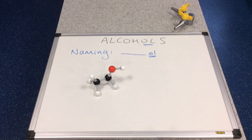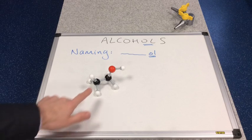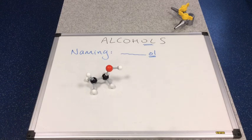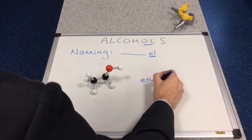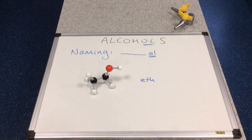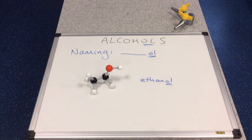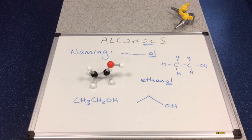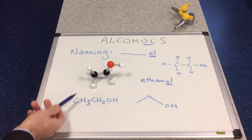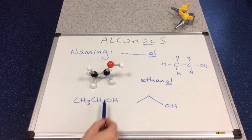We'll look at naming some alcohols now. You can see in blue they've written a squiggly line with 'ol' at the end — that's to let you know that alcohols have 'ol' at the end of their name. We'll start with this one here. We have two carbons in the chain, so it's going to be 'eth'. We have the structural formula: CH₃, CH₂, OH.